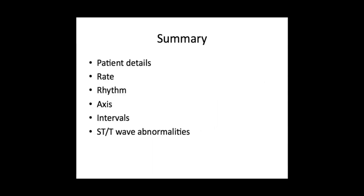The key thing about trying to work out what's going on when you're presented with an ECG is to have a structured approach to interpreting it. The way I do it is to first of all check the patient's details, then look at the rate, then the rhythm and the axis, then look at the intervals — the PR interval, the QRS interval, and the QT interval — to see if there's any abnormalities, and then looking at the ST segments and the T waves.